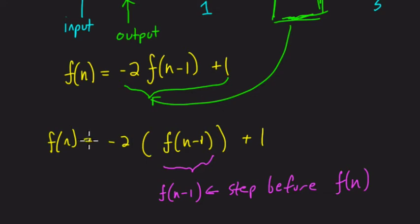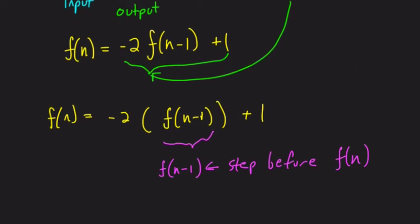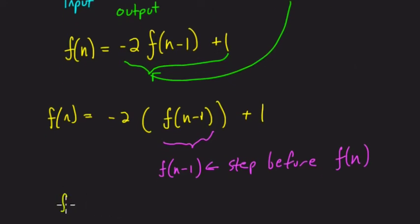In other words, find out what happens in the step before whatever step you're looking at. So let's say we're looking at f of 2, for example. Let's say instead of f of n, we put a 2 there, make it more concrete.